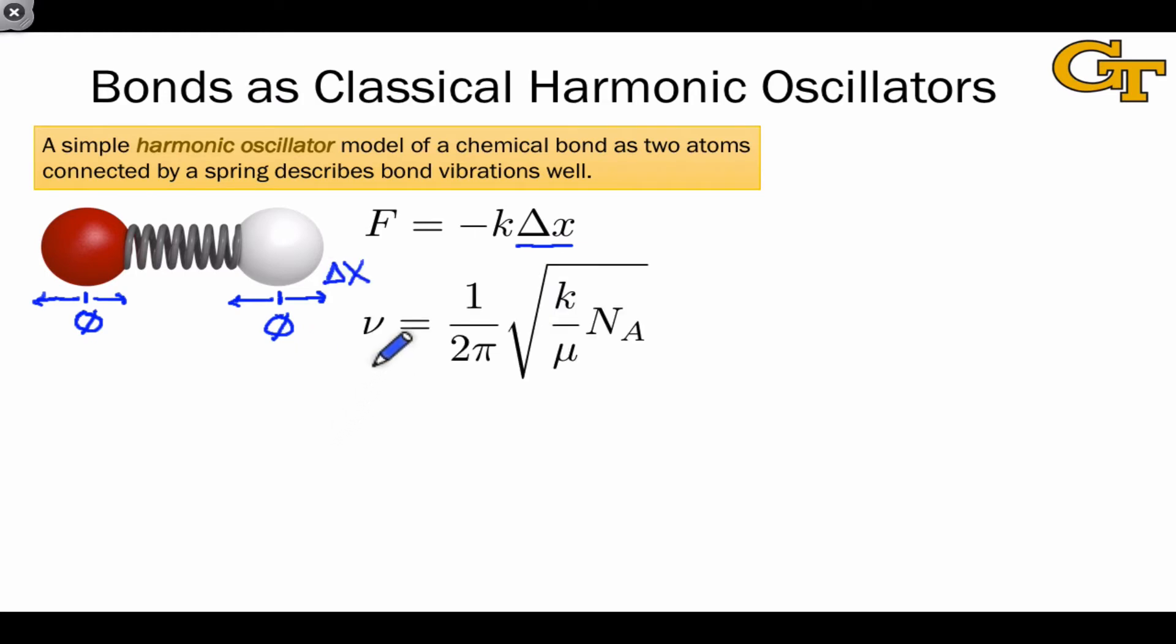Although we won't get into the math of this, the second equation on this slide shows us how the frequency of the vibration varies as a function of the type of atoms involved and the type of bond involved. Our main goal here is to understand how this equation tells us how the frequency varies as a function of mass and the strength of the bond.